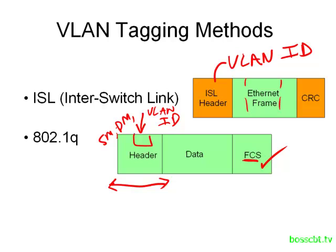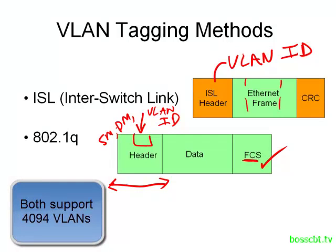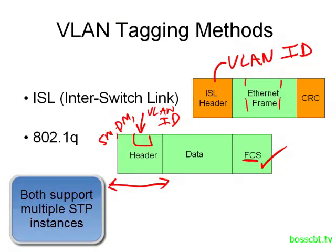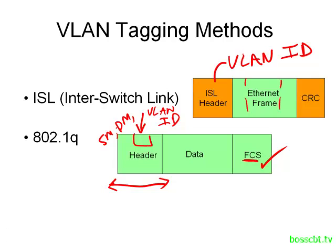So those are two pretty different ways of implementing VLAN tagging. However, there are things in common — both methods support a large number of VLANs: specifically, 4,094 VLANs each. That means if you have a very large network with many VLANs, you can use either method. Also, both support multiple instances of the spanning tree protocol, which gives you a lot more flexibility and performance enhancements. One other big difference between these two methods is the use of the native VLAN.